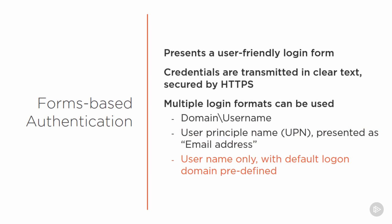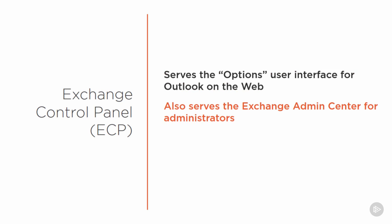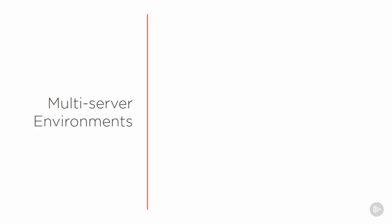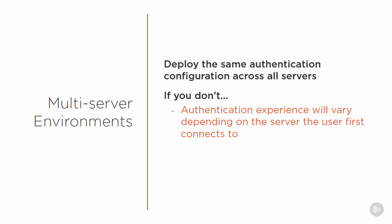You can also use username only with a pre-defined default login domain. Closely related to Outlook on the Web is the Exchange Control Panel (ECP), which serves the options interface for OWA users and the Exchange Admin Center for administrators. You should configure ECP's authentication to match OWA settings. In a multi-server environment like Globomantics, it's important to deploy the same authentication configuration across all servers sharing the same namespace — otherwise users will have inconsistent authentication experiences depending on which server they first connect to.